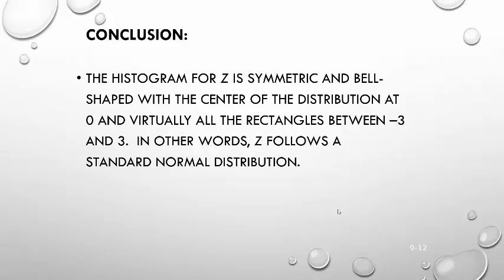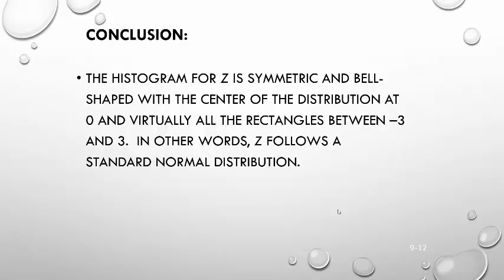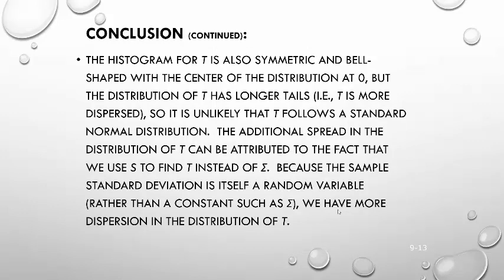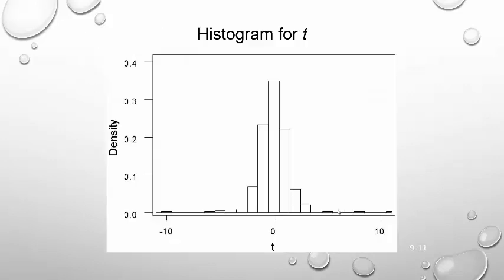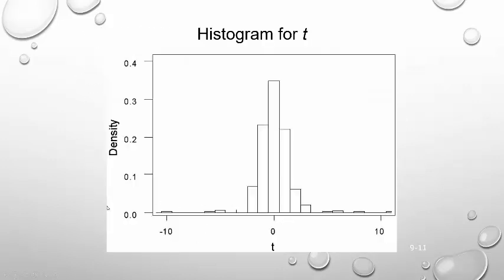The histogram for z is symmetric and bell-shaped, centered at zero, with virtually all values between -3 and 3 — it follows a standard normal distribution. The histogram of t is also symmetric and bell-shaped, centered at zero, but the t-distribution has longer tails and is more dispersed, so it does not follow a standard normal distribution. The additional spread is attributed to using s to find t instead of sigma. Because the sample standard deviation is itself a random variable, we have more dispersion in the distribution of t.